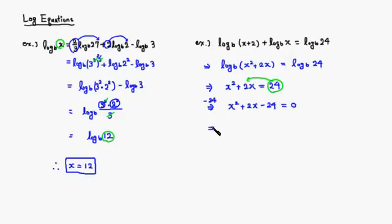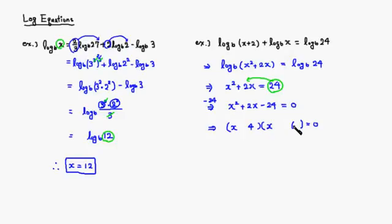Let's factor. We need two numbers whose product is negative 24 and whose sum is positive 2. Since one must be negative, I'll try 6 and negative 4: negative 4 times 6 is negative 24, and negative 4 plus 6 is positive 2. That works. So we get (x + 6)(x - 4) = 0, giving two solutions: x equals 4 and x equals negative 6.